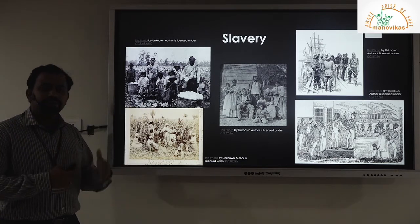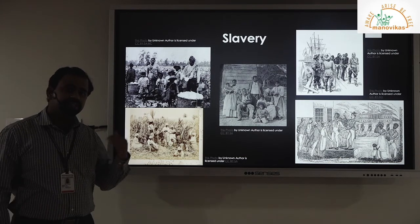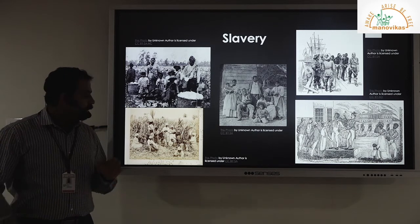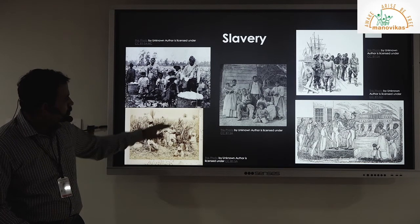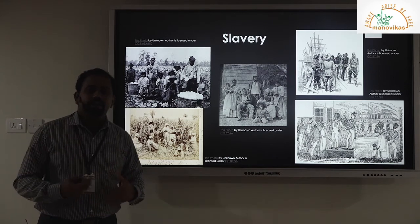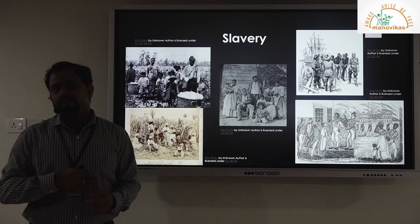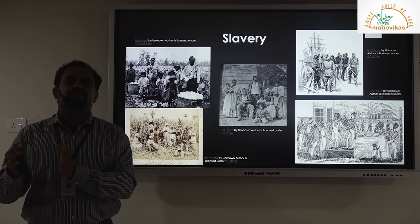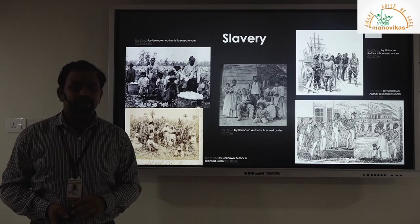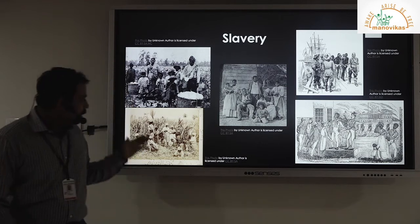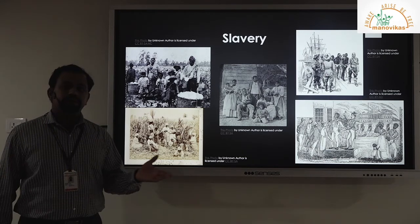Let us talk about how slavery began in South and North America. When Europeans came as conquerors and settlers in the Americas, these settlers had their colonies and plantations — mostly sugar or cotton plantations. For that, they required lots of working hands. They tried to make the local natives into slaves, but because of inhuman conditions, the way they were made to work, and diseases like smallpox and measles brought by Europeans, the native population decreased. So they required a group of people who were tough and immune to these diseases.